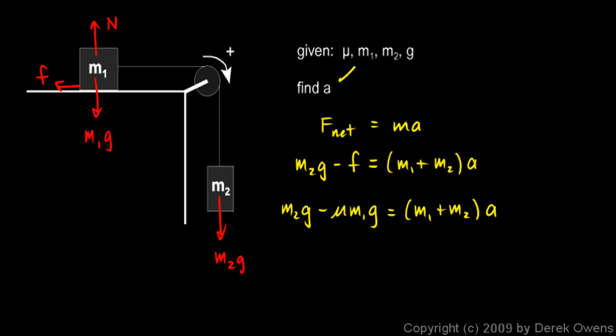We were told to find A. So we can just divide each side by m1 plus m2. And we're left with an expression for A. It would be m2g minus mu m1g divided by m1 plus m2. And we're done. That's our answer.